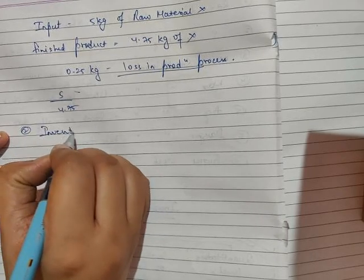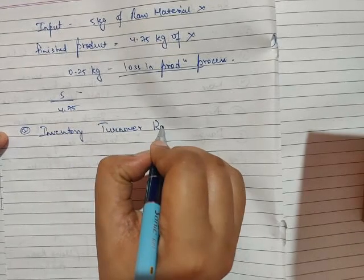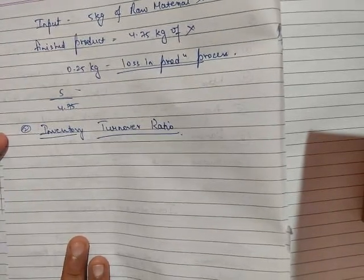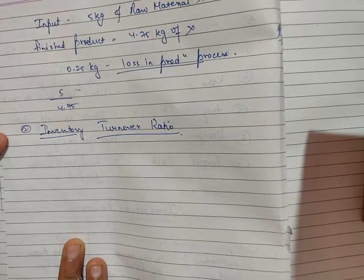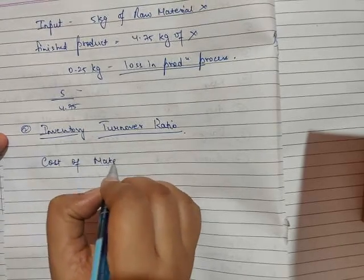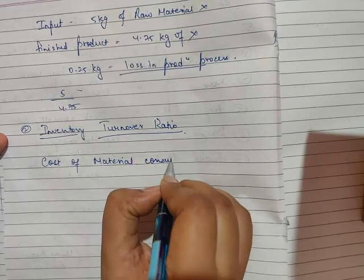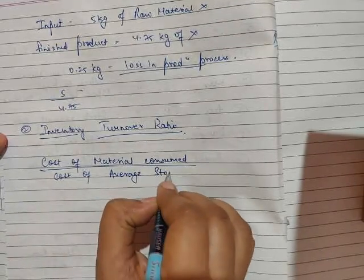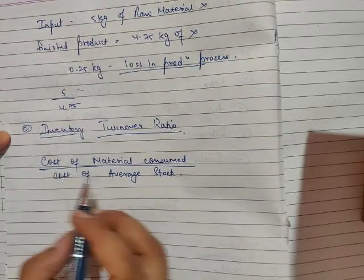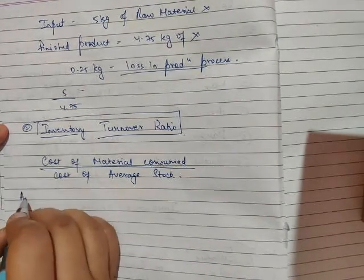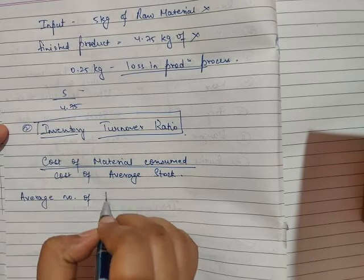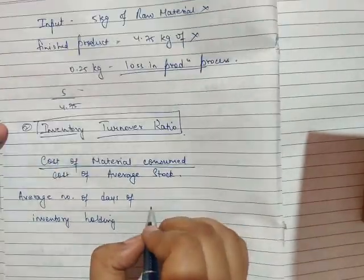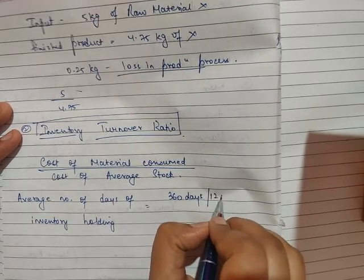The next and most important ratio is the inventory turnover ratio. You can always expect a question from inventory turnover ratio in your exams. It is calculated by cost of material consumed divided by the cost of average stock. With the help of this inventory turnover ratio we can calculate the average number of days of inventory holding by dividing it with 360 days or 12 months.